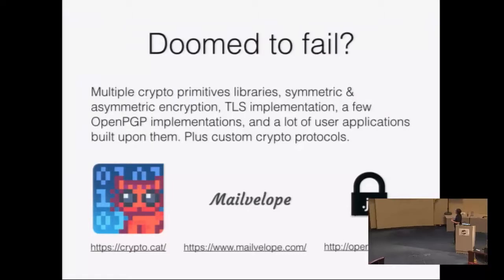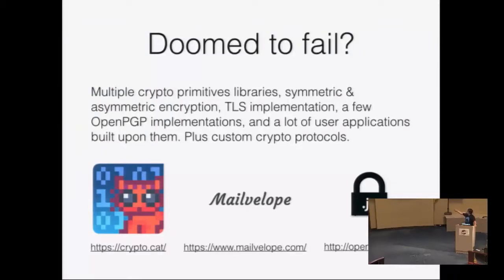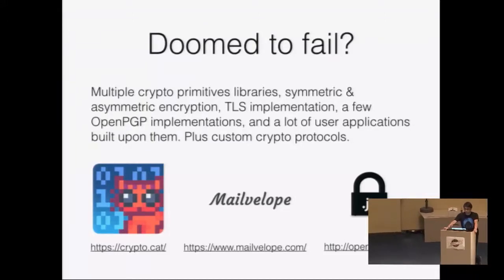Right now in 2014, we have libraries implementing multiple cryptographic primitives in JavaScript: symmetric crypto, TLS implementations, a few OpenPGP protocol implementations, a lot of user applications built on those libraries, and some random crypto protocols. Three applications you probably know at least some of: CryptoCat, a multi-party encrypted chat application; Mailvelop, which is basically GPG or PGP in the browser; and OpenPGP.js, the library used by Mailvelop. I have looked at all three, and some of my findings will be featured during this talk.